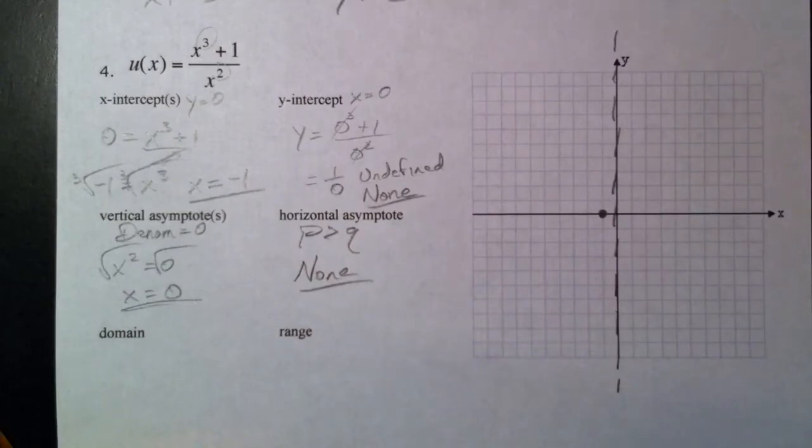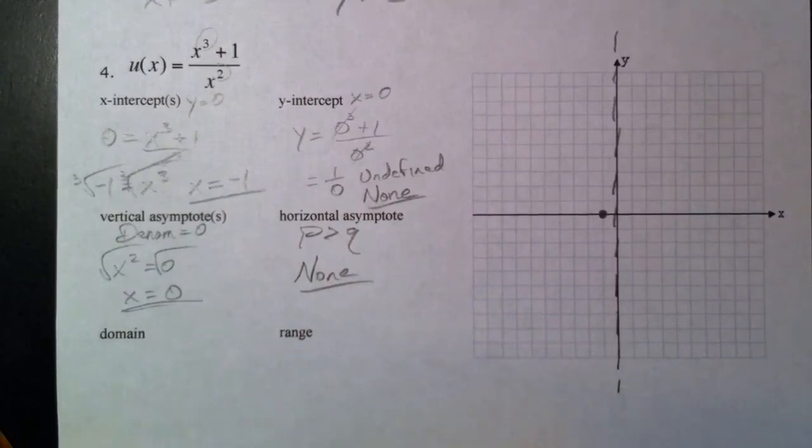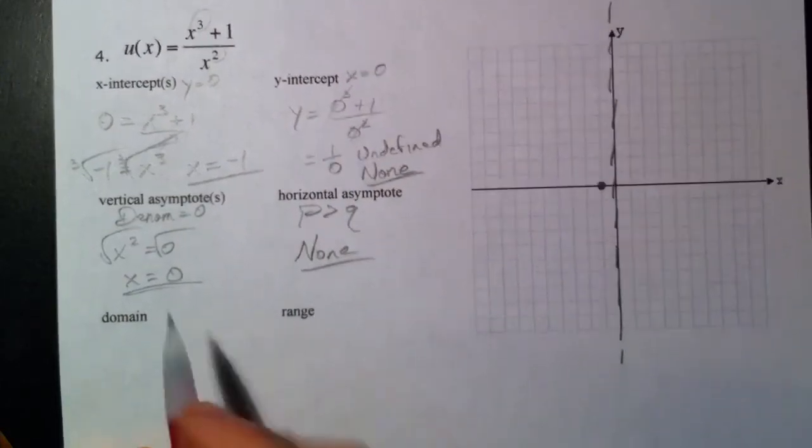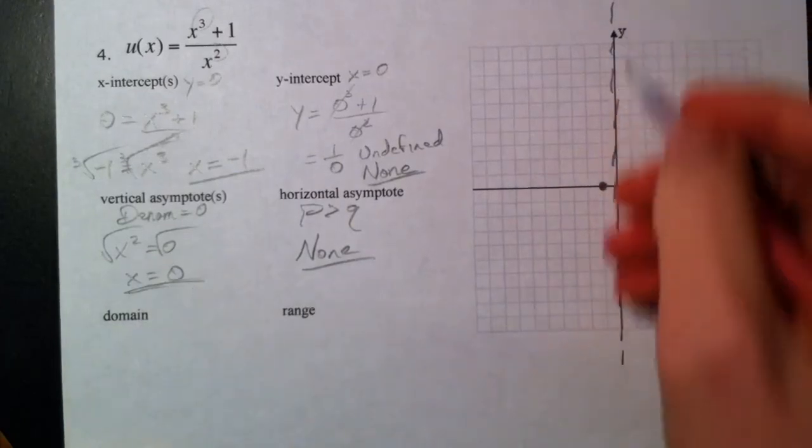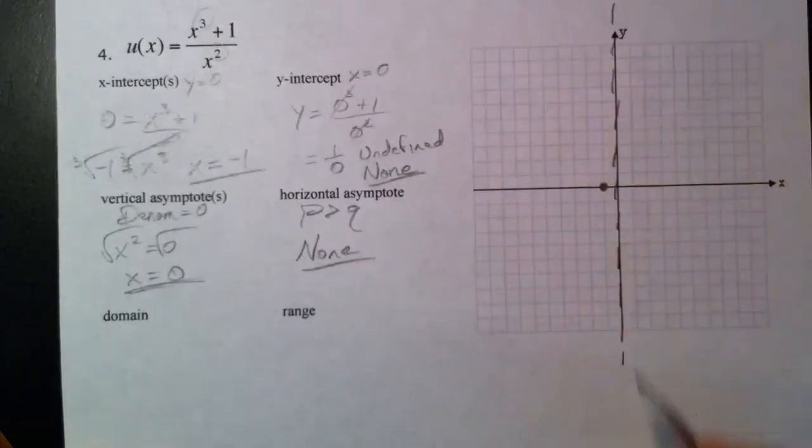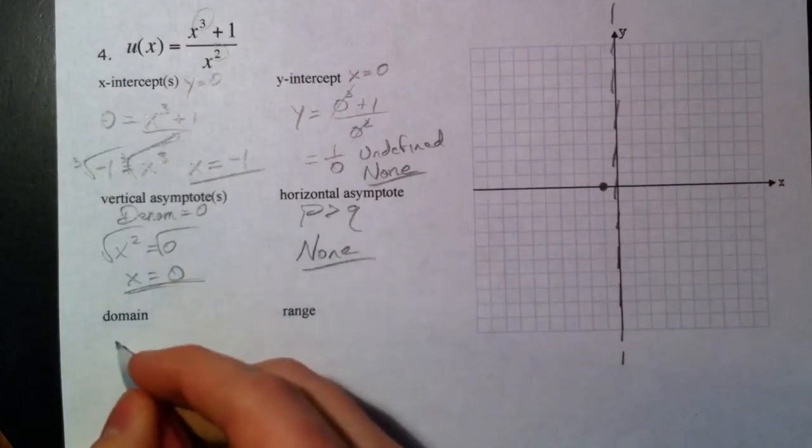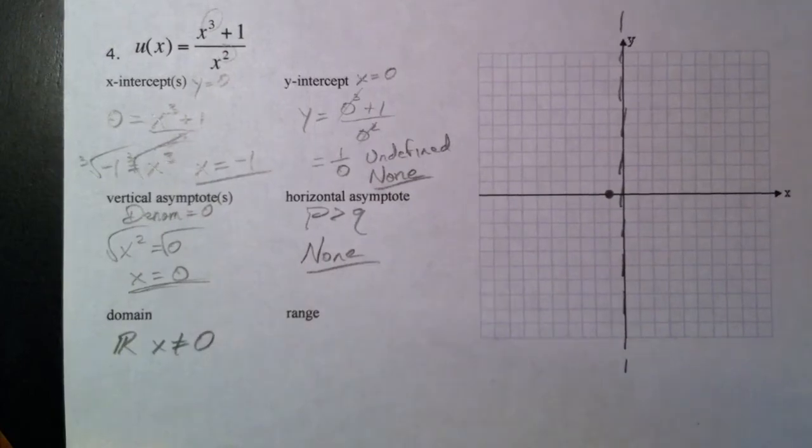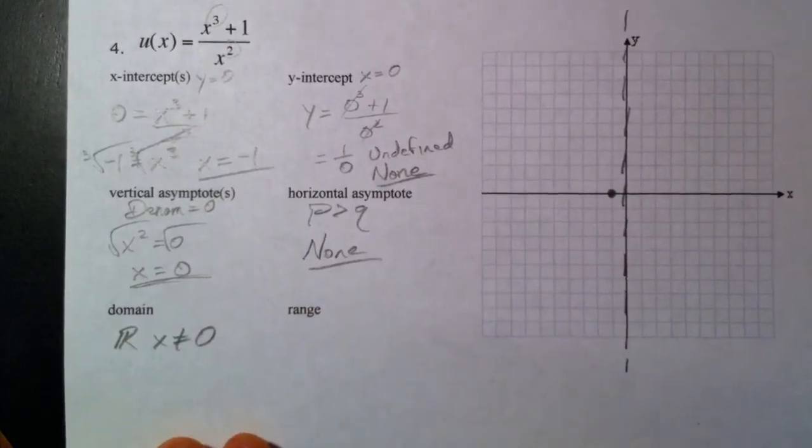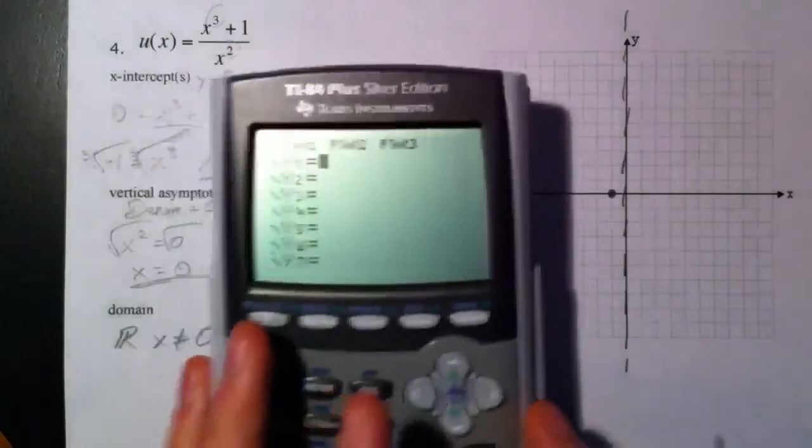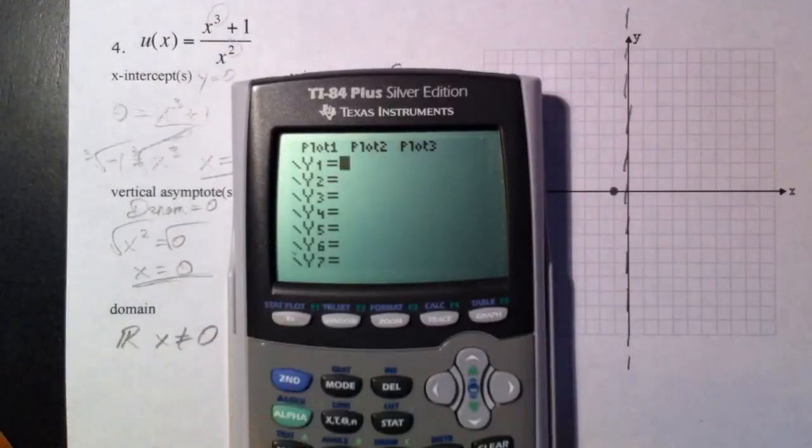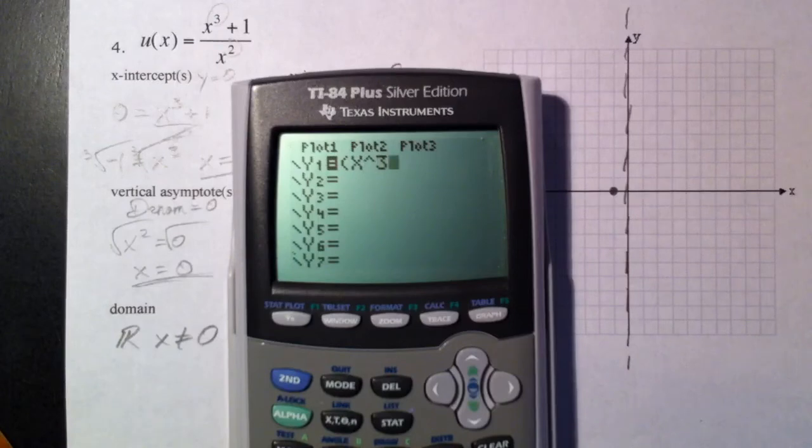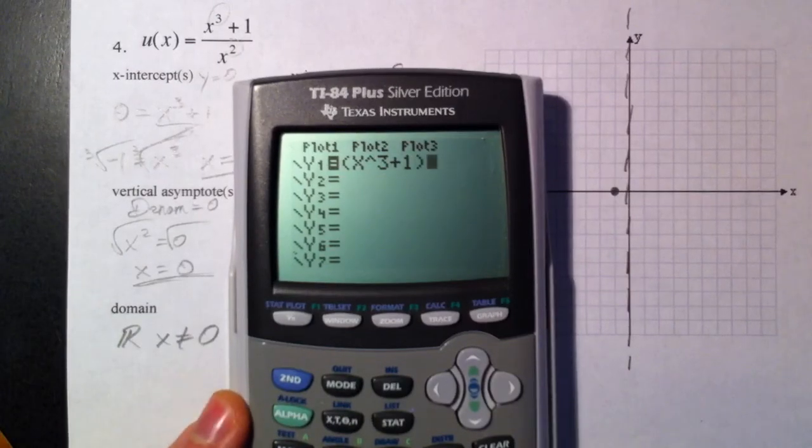Our domain - again closely related to our vertical asymptote. We can't get a y when we plug in x equals 0, so our domain is all real numbers except x can't equal 0. Our range - we're gonna graph it first and then see what it looks like. We want the top first, so x³ + 1 divided by x².